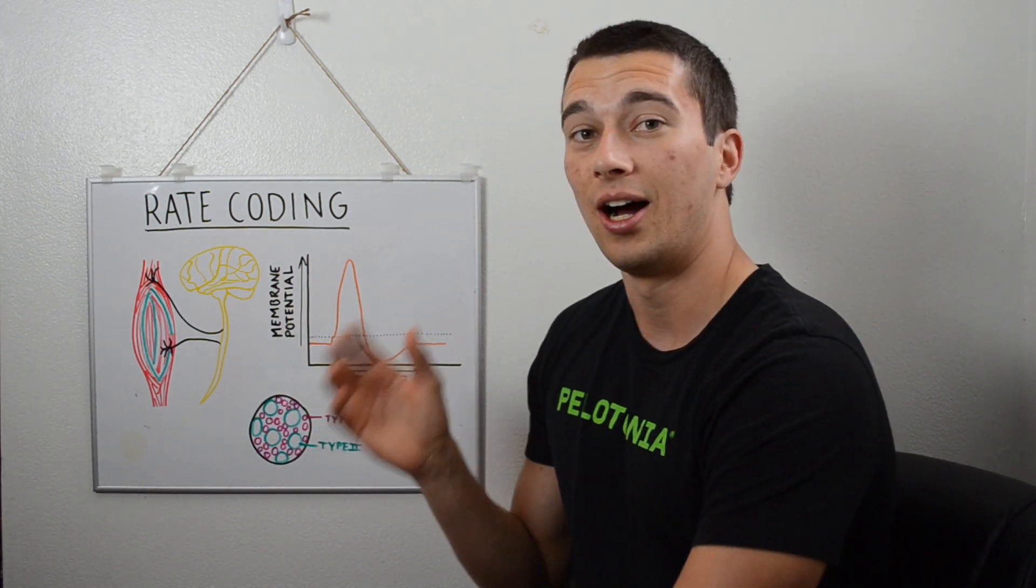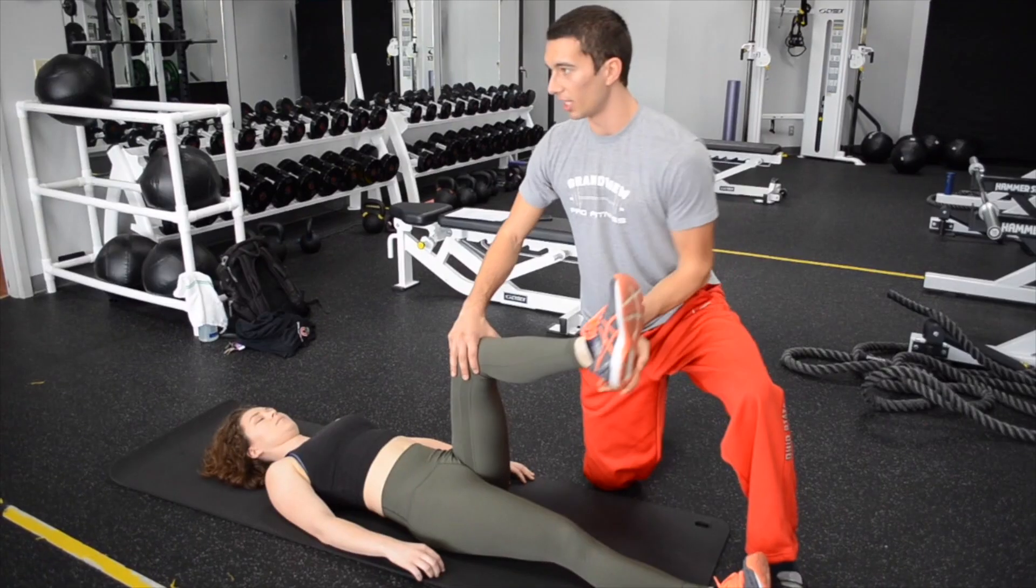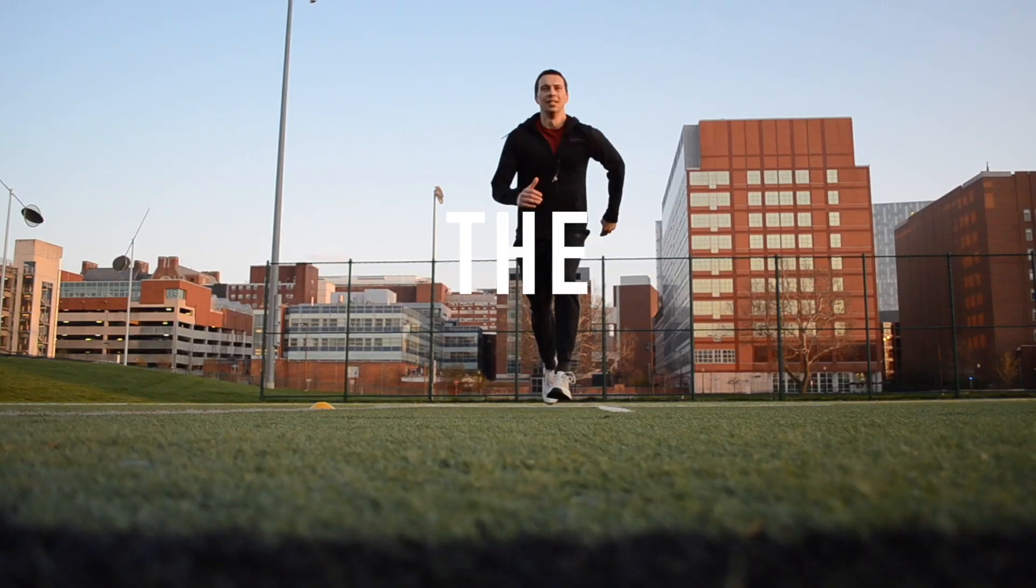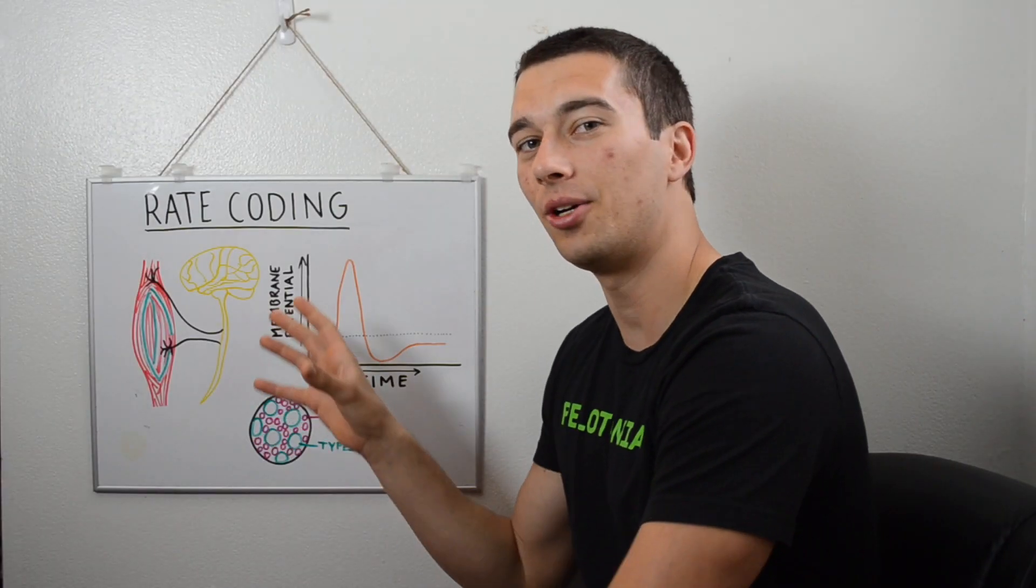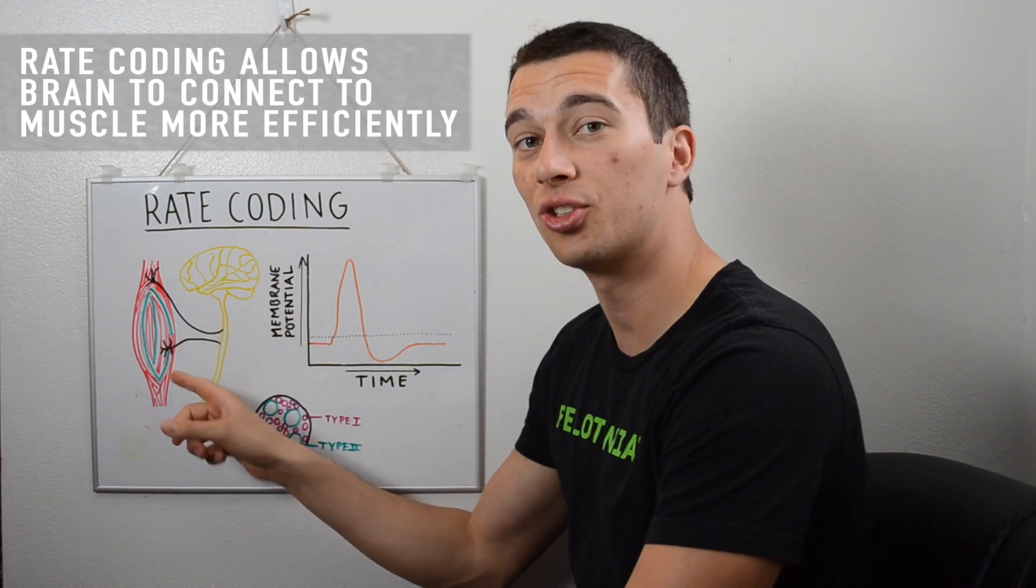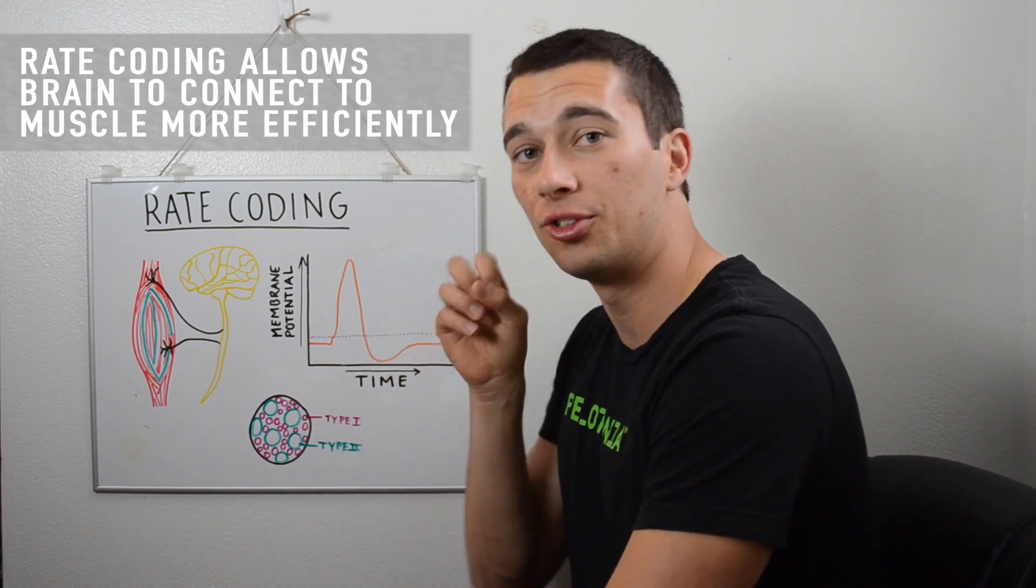Alright guys, let's dive into it. So rate coding is one of the phenomena that allows us to connect the brain to the muscle more efficiently. With training, we can send action potentials more efficiently through a nerve from the brain down to the muscle, and we're going to talk about exactly how that works.